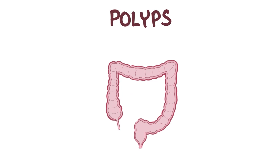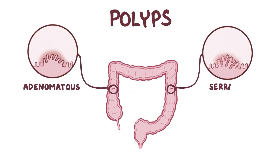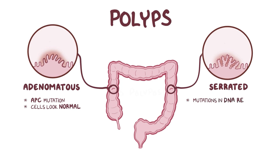There are many different types of polyps, and some are more prone to becoming malignant. Those are called premalignant or neoplastic polyps, and these premalignant polyps can be classified into adenomatous and serrated, according to how they look under the microscope. Typically, adenomatous polyps have an APC mutation and the cells look like normal colonic mucosa cells, whereas serrated polyps have defects in DNA repair genes and have a sawtooth appearance.